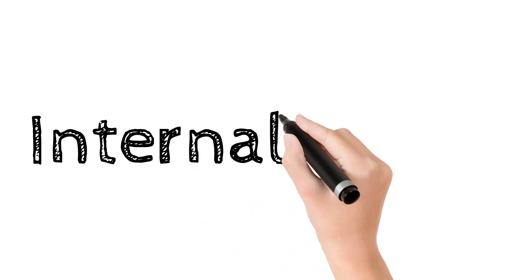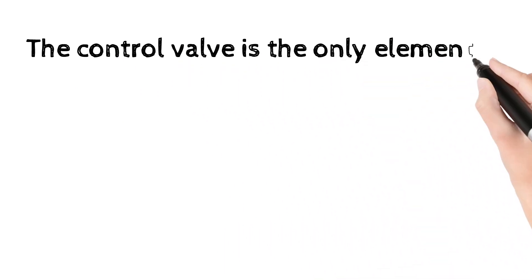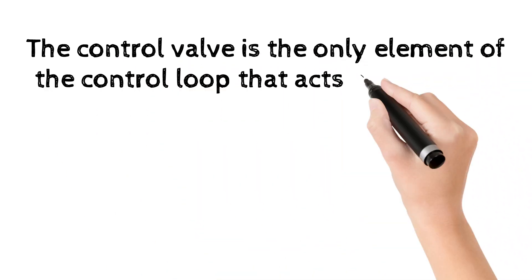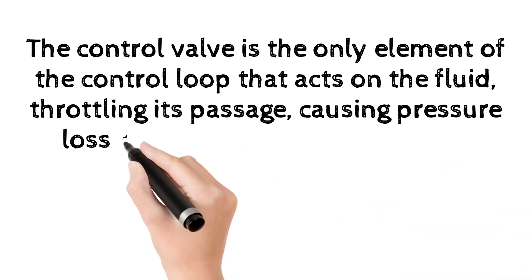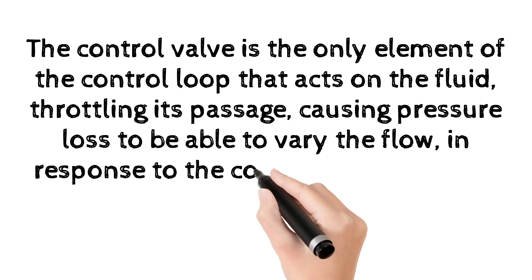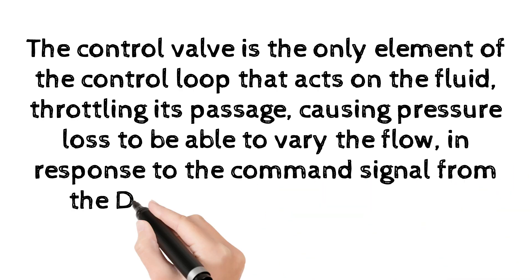Internal faults. The control valve is the only element of the control loop that acts on the fluid, throttling its passage, causing pressure loss to be able to vary the flow, in response to the command signal from the distributed control system.